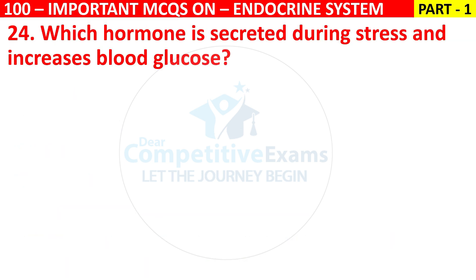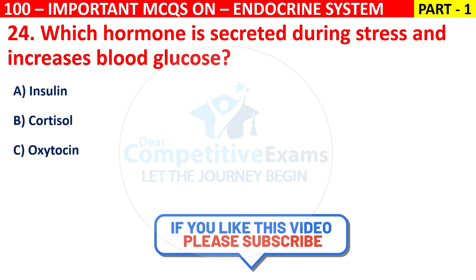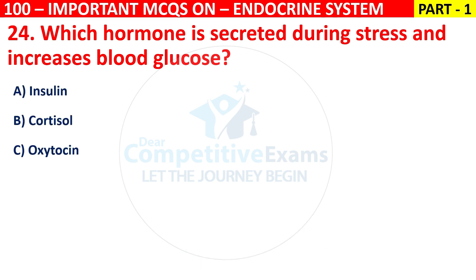Q24. Which hormone is secreted during stress and increases blood glucose? Options are insulin, cortisol, oxytocin, or prolactin.